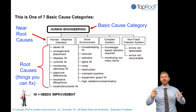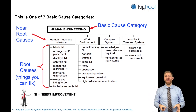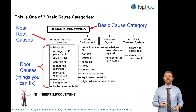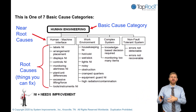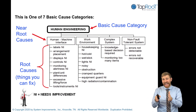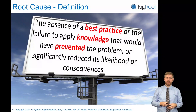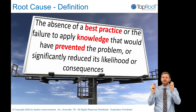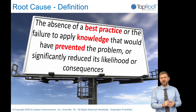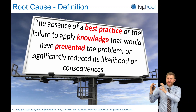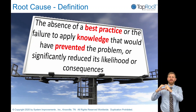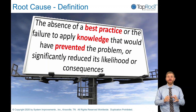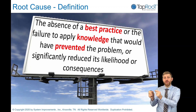Just one of these categories is human engineering, where we look for things you can fix in your system — things like labels that need improvement, arrangement and placement of materials, whether people were monitoring too many items, or issues with the work environment. Our goal when defining root cause analysis is: the absence of a best practice or failure to apply knowledge that would have prevented the problem or significantly reduced the likelihood or consequences. By searching for missing best practices, root cause analysis becomes about finding things we can implement to improve our system and prevent reoccurrence.